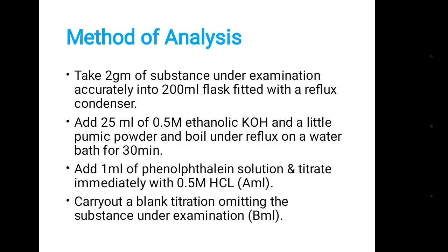Method of analysis: Take 2 grams of substance under examination in a 200 ml glass flask fitted with a reflux condenser. Add 25 ml of 0.5 molar ethanolic KOH and a little pumice powder, and boil under reflux on a water bath for 30 minutes. Then add 1 ml of phenolphthalein solution and titrate immediately with 0.5 molar HCl.